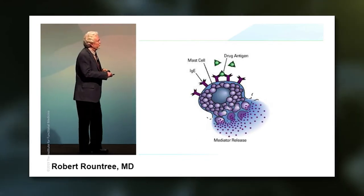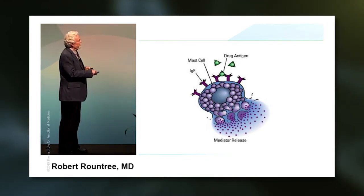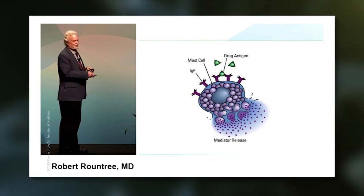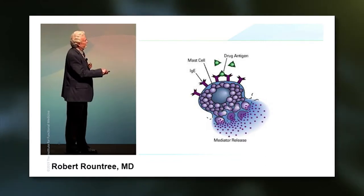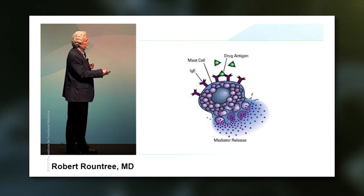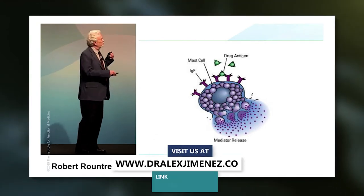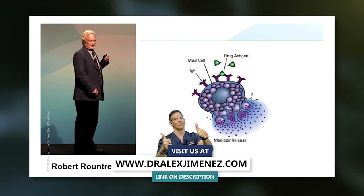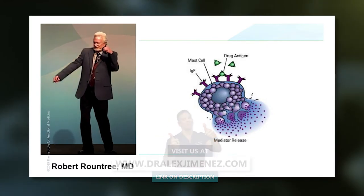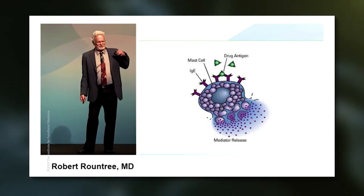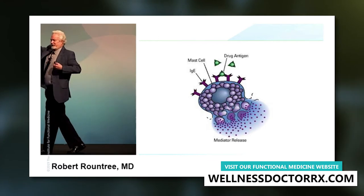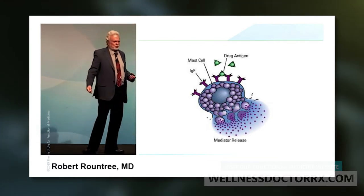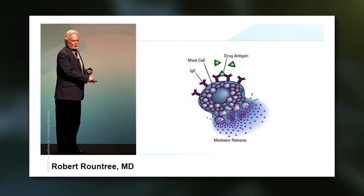Here's how this works. Here is a mast cell full of all these mediators. It's got IgE specific to a certain antigen on its cell surface. Now this says drug antigen, but this could be bee pollen — could be anything the person is sensitive to. What it does is cross-link these IgEs. And when those IgEs are cross-linked, that causes a conformational shift in transmembrane proteins. And that conformational shift — it's like a little dance going on inside the cell. Suddenly these proteins are doing this thing, and it's like a handoff. That handoff leads to the assembly of microtubules inside the cell.